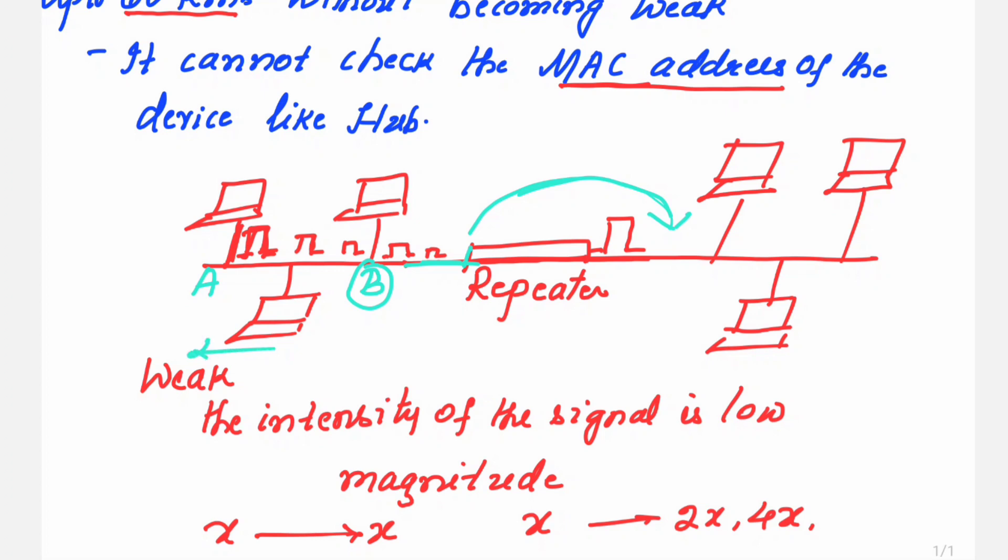So, you can place the repeater at a distance of 200 meters. What is the maximum distance in the network? Depending on that, the distance to place the repeater can be decided. It is not always 200 meters. It can be 100 meters also or it can be more than 200 meters also.